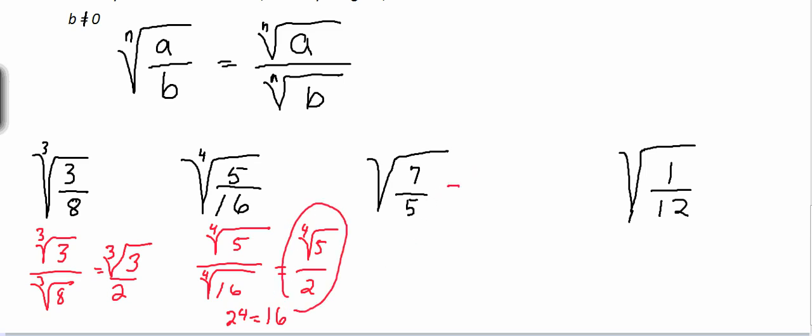Here I have radical 7 over radical 5. Now here I cannot simplify radical 5, but another rule of simplifying radicals is I can't leave a radical in my denominator.